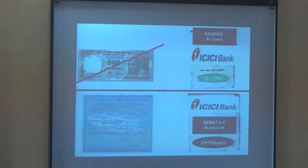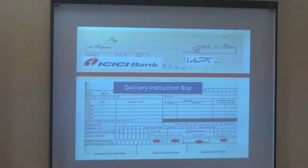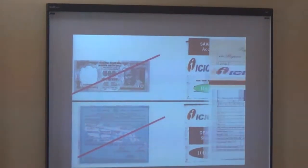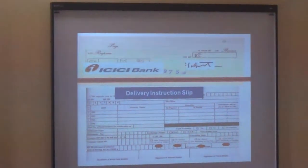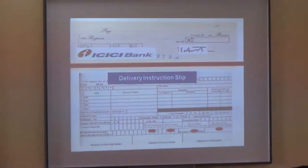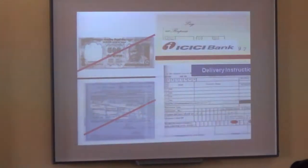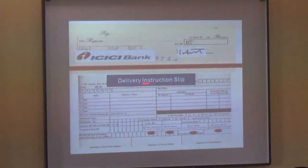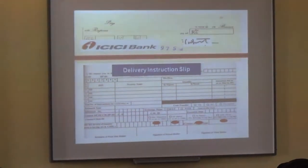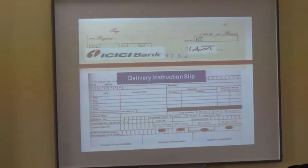In the same way, when I open a demat account, I get a Delivery Instruction Slip. Just as opening a savings account gives me a chequebook — using one cheque I can give money to anybody from my savings account — on the same lines, when I open a demat account I get a Delivery Instruction Slip, and using one instruction slip I can give shares to anybody from my demat account. Simple as that.